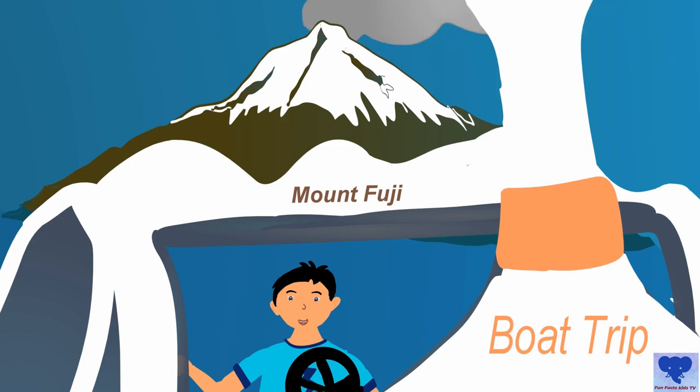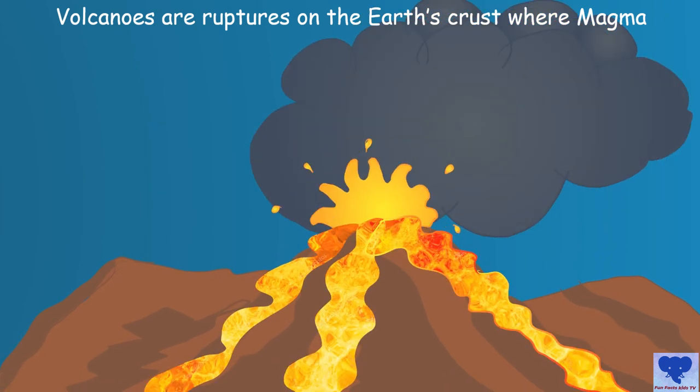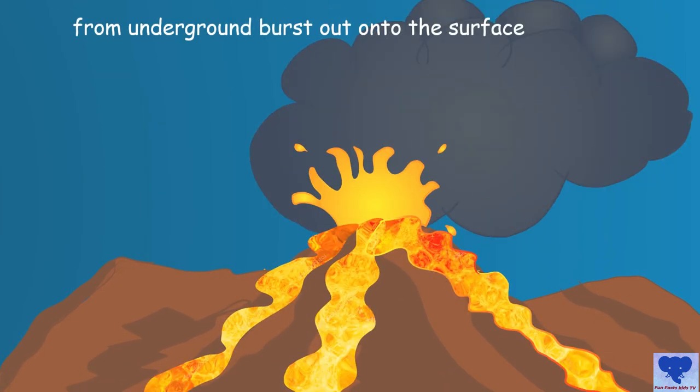There are also countless volcanoes on the ocean floor. But how does the volcano erupt? Keep watching this video to learn more about volcanoes. Volcanoes are leaks or ruptures on the earth's crust where red-hot liquid rock, also known as magma, from underground bursts out onto the surface.